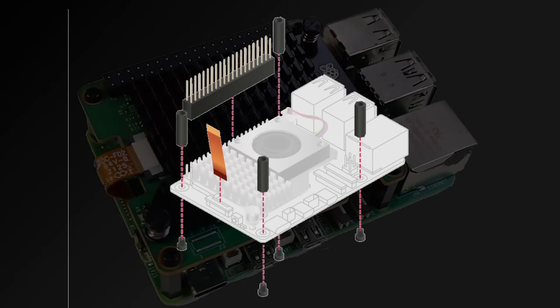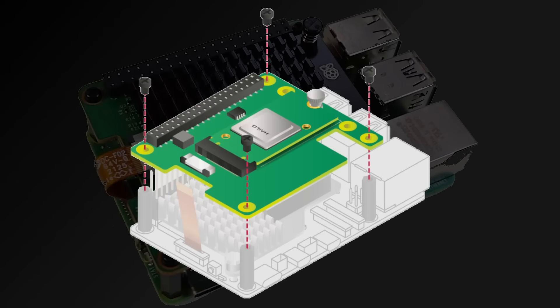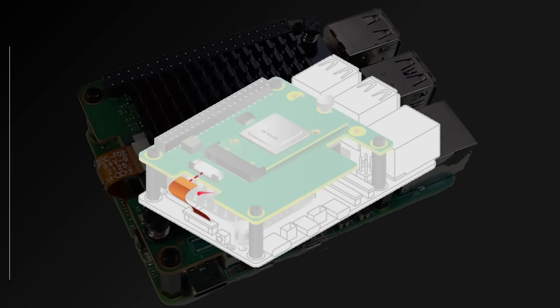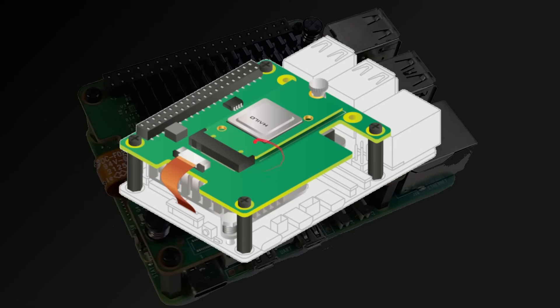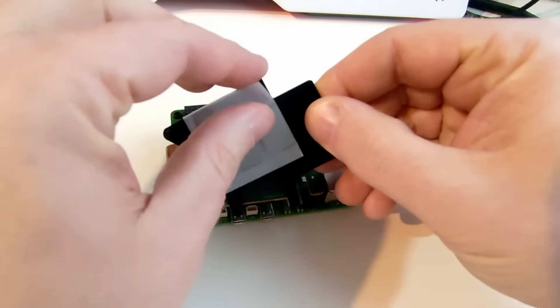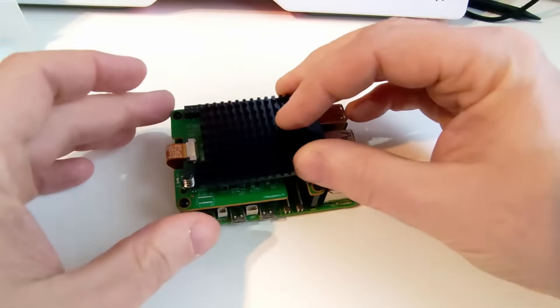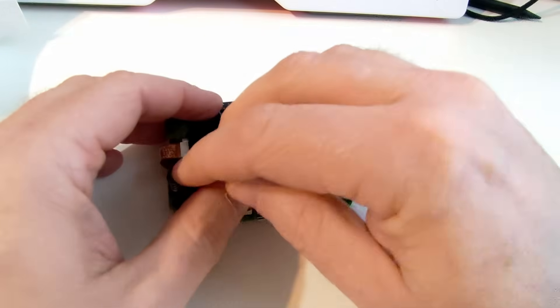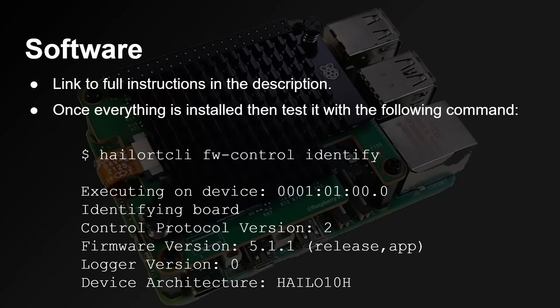Fitting it is really easy. You put in the stubs — those little pillars for holding up the board — place the board on top, and connect the PCIe connector via the ribbon cable. The new AI Hat has a heat sink: peel back the protective layer for the sticky bits, push it down and connect it into the holes. You also need to install some software — I'll leave a link in the description to the full instructions from Raspberry Pi. Once everything is installed, you can test it by running the Hailo RT CLI and asking the firmware what it is, and it comes back confirming it is a Hailo H10 board.